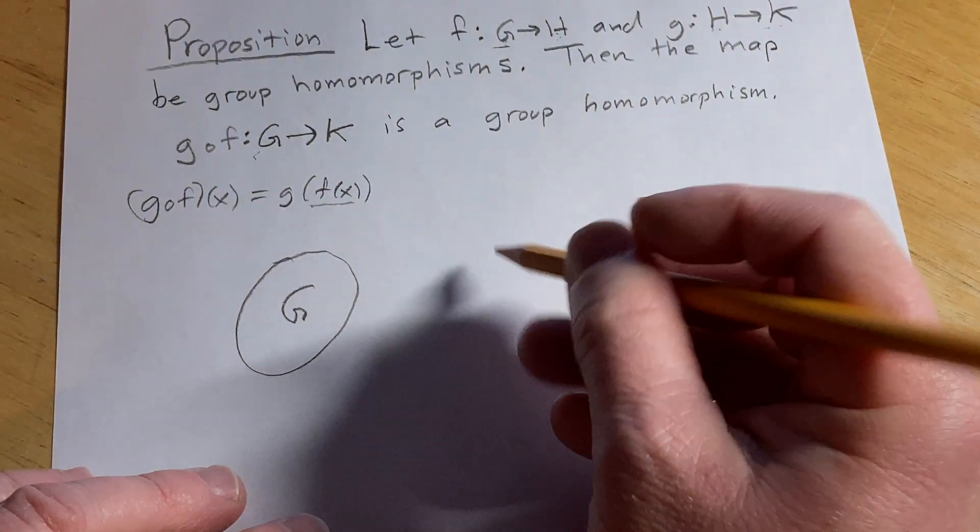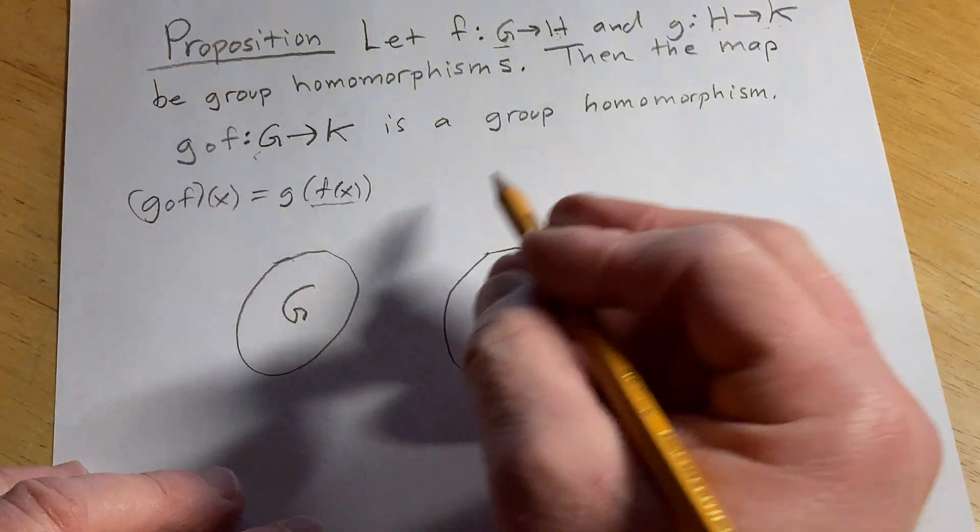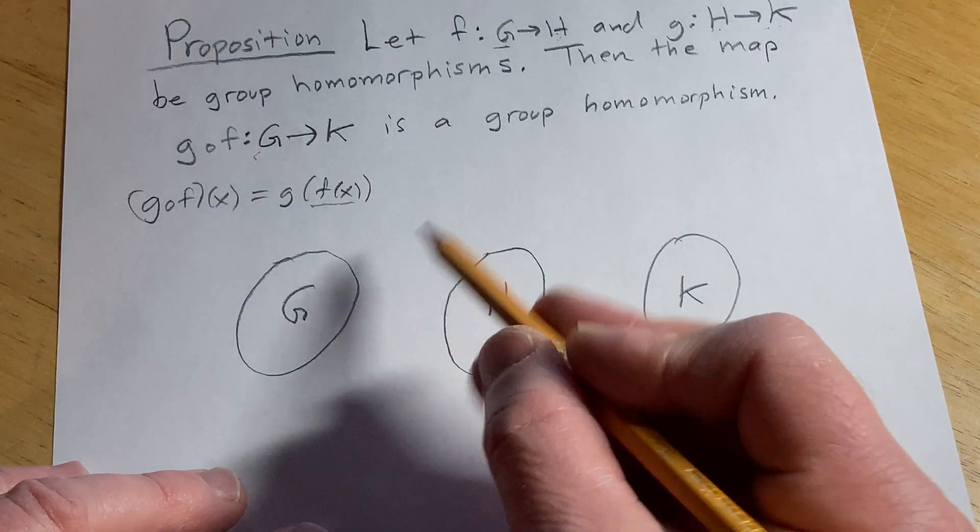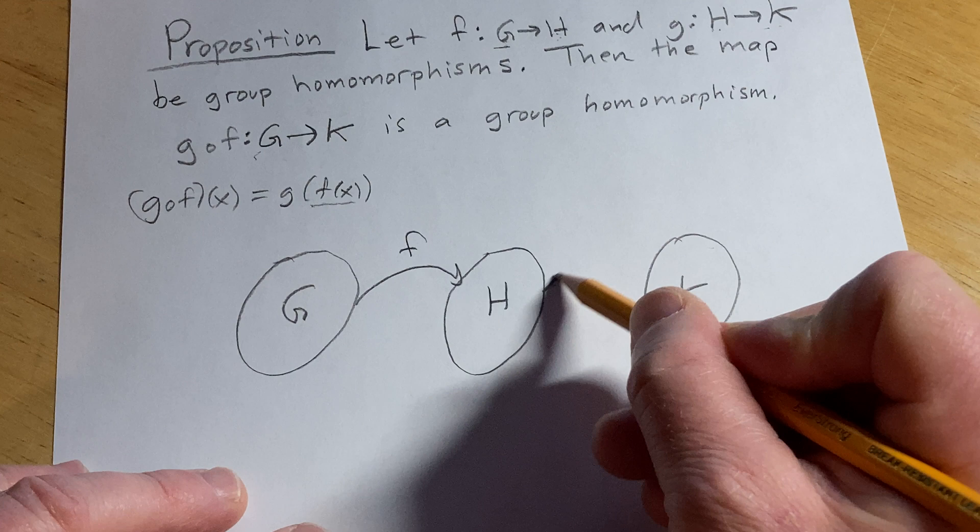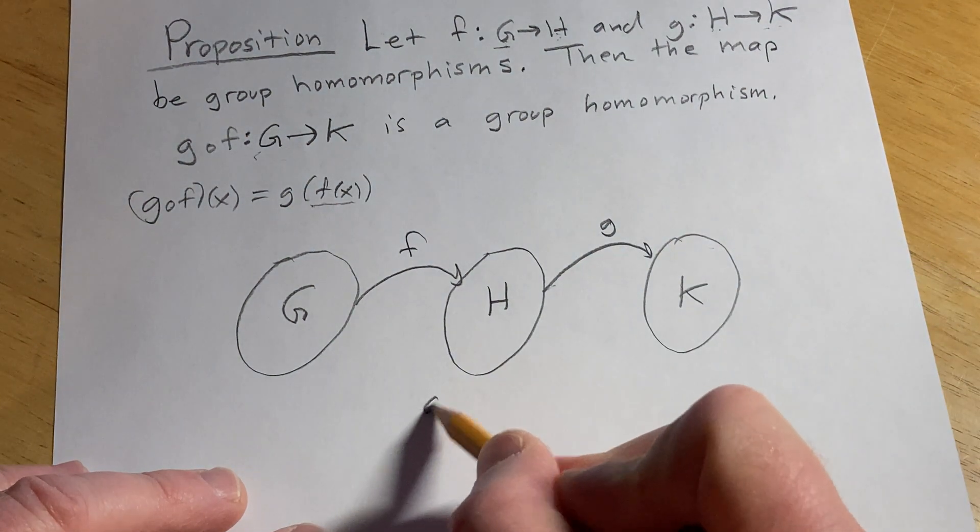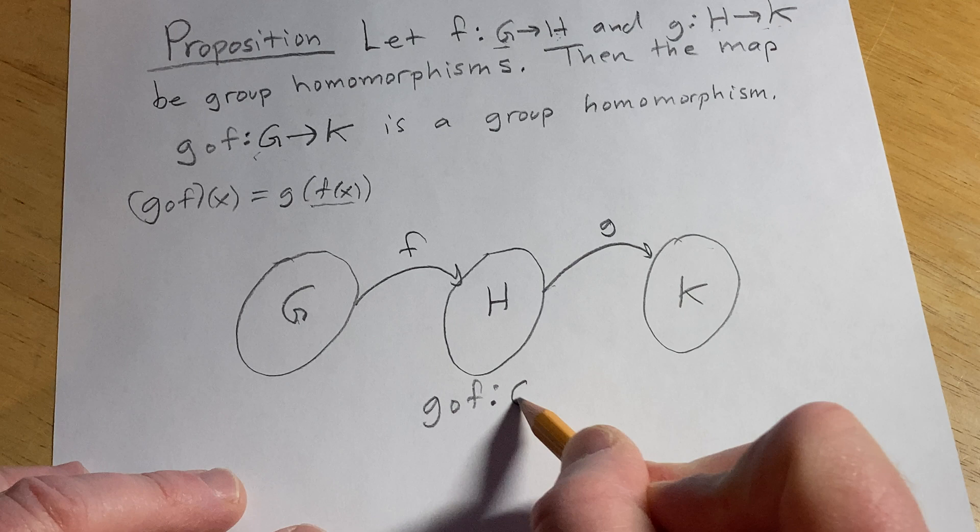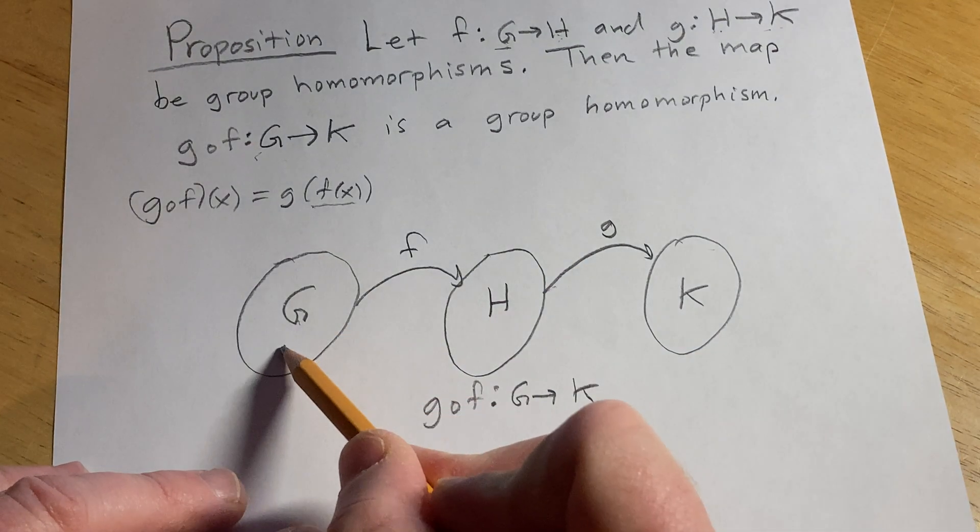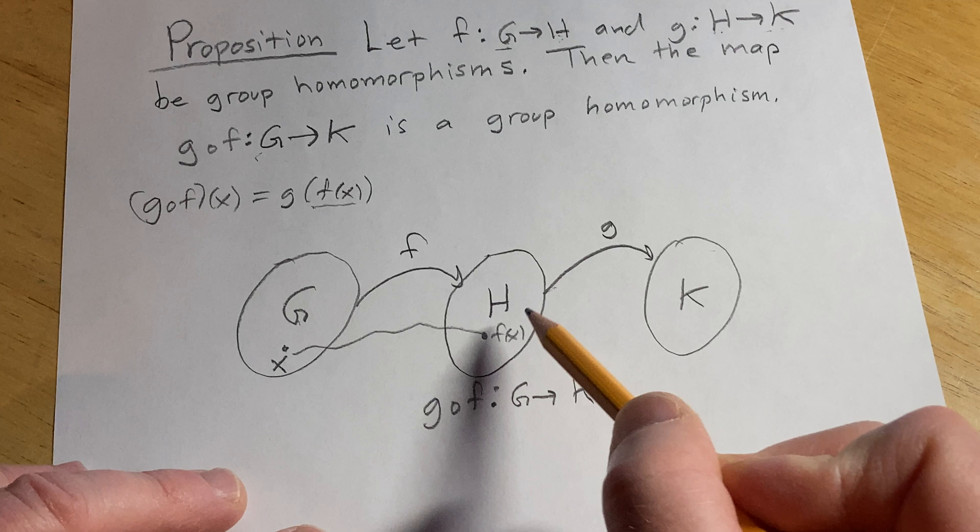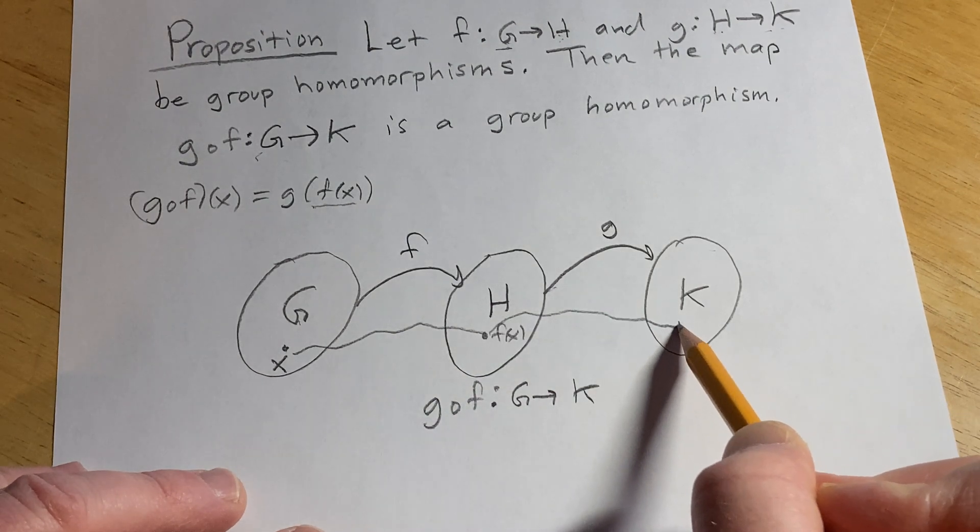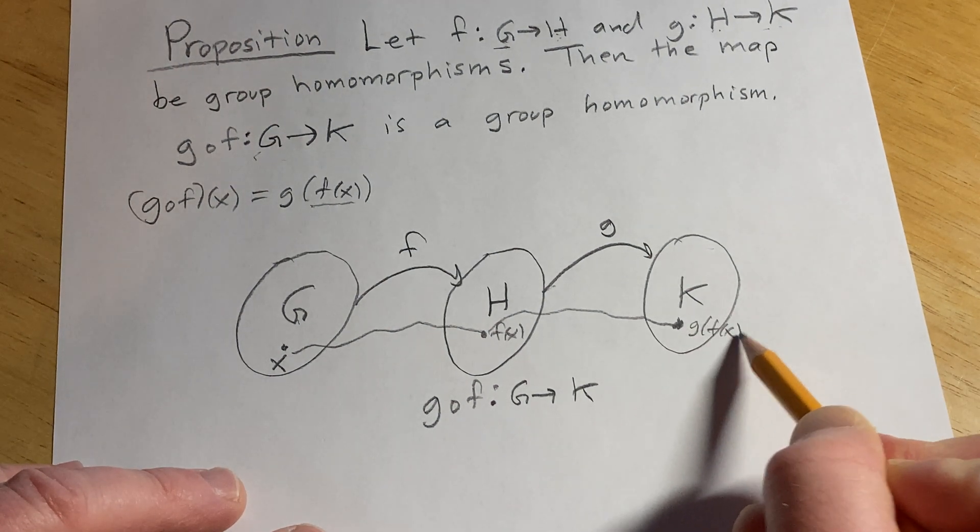Here's G. Here's H. Here's K. And we know that f goes from G to H, so f would look something like this. And we know g goes from H to K, so g would look something like this. And so we're looking at g∘f, okay, and that goes from G to K. Right, because if you take an element here, x, f takes it, sends it to f(x), and then g takes the element f(x) and sends it to another element over here, which we don't know what it's called, but, well, it's called g(f(x)), right? It'd be g(f(x)). That's the idea.